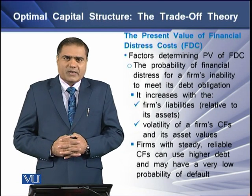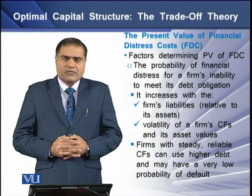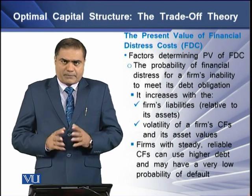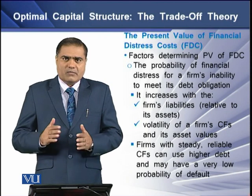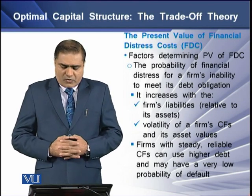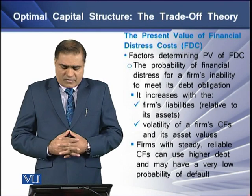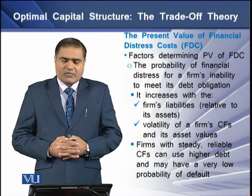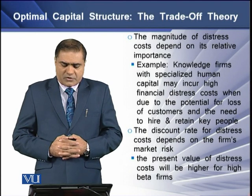The determining factors of financial distress cost: the first is the probability of financial distress, which is a firm's inability to meet its debt obligations. This probability increases with the firm's liabilities relative to its assets, and also increases due to the volatility of the firm's cash flows and asset values. Firms with stable, reliable cash flows can use higher amounts of debt and may have a very low probability of default.